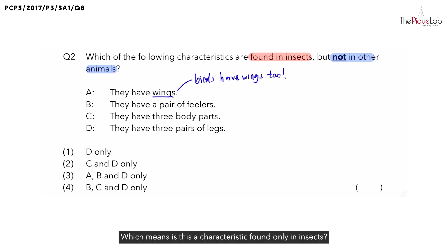Which means, is this a characteristic found only in insects? No, so we can cross out A. Next, what about B? For B, they say that insects have a pair of feelers. Now is this found only in insects?